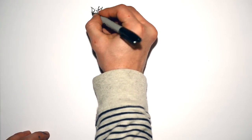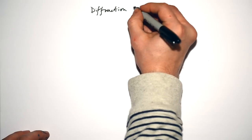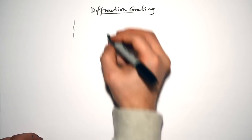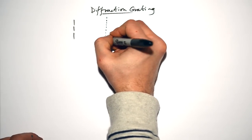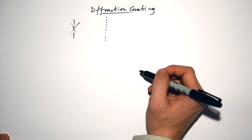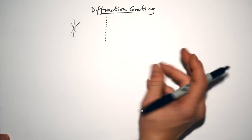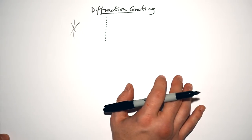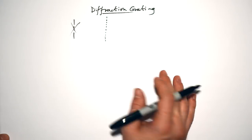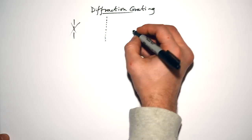How is a diffraction grating different to Young's double slit? Instead of just two slits, we have loads and loads of very small slits, producing lots of diffraction when light passes through. We can't use Young's double slit equation here — we need a new, more accurate equation. We use Young's equation for the double slit and a different equation for the diffraction grating.